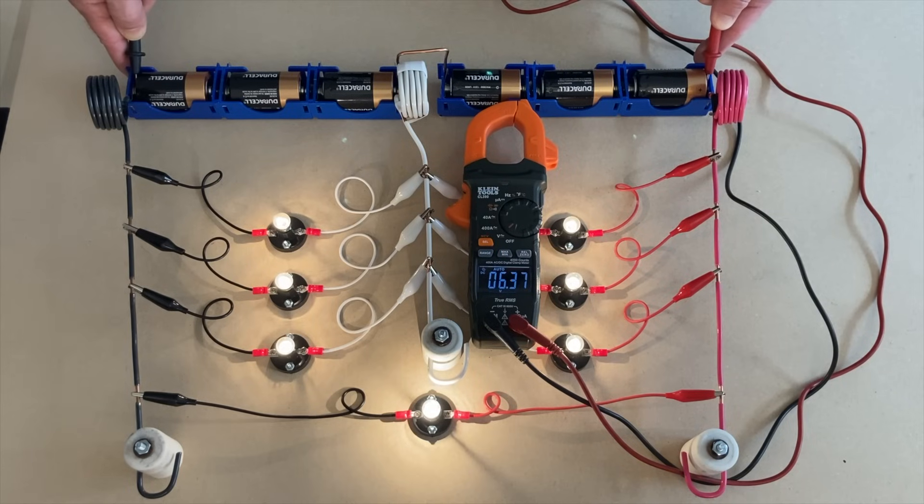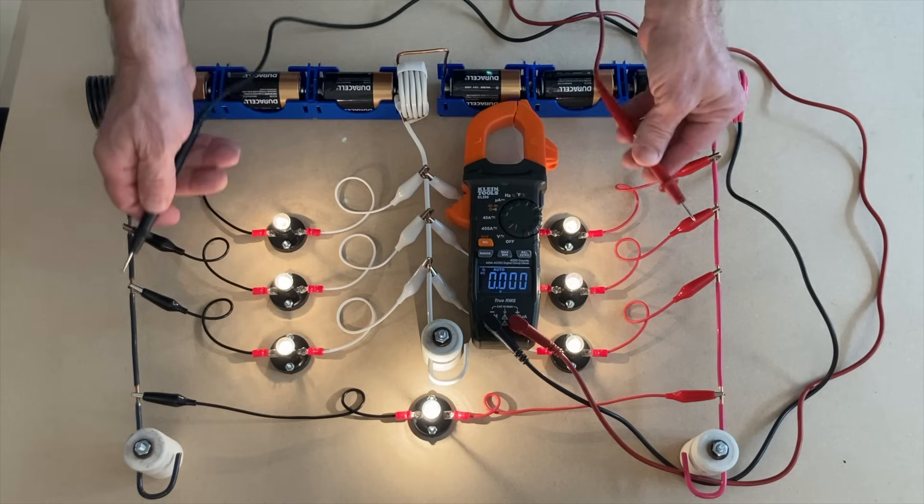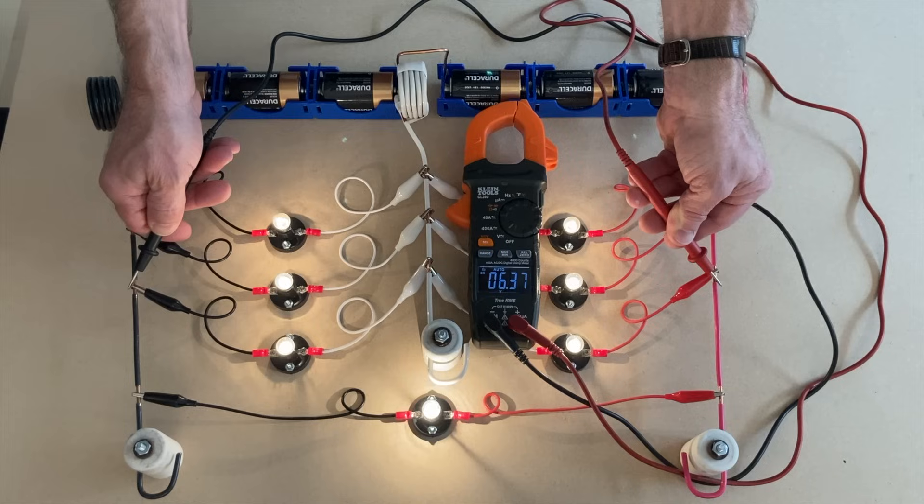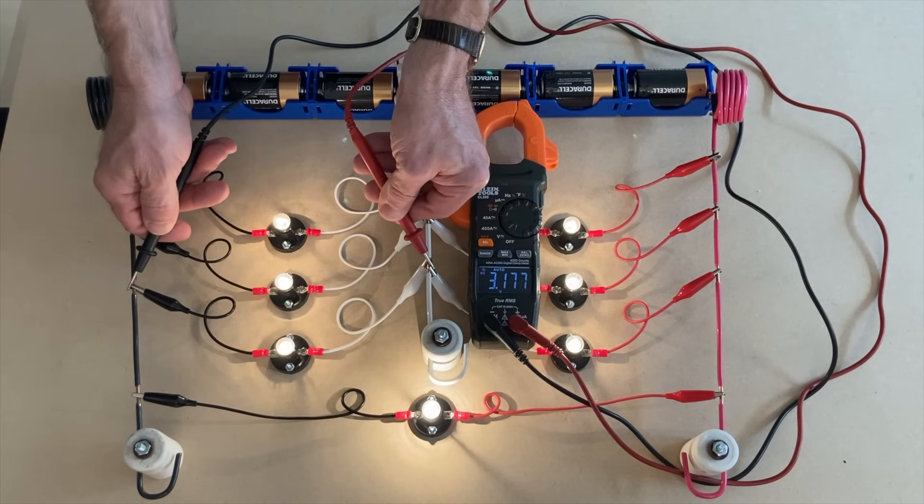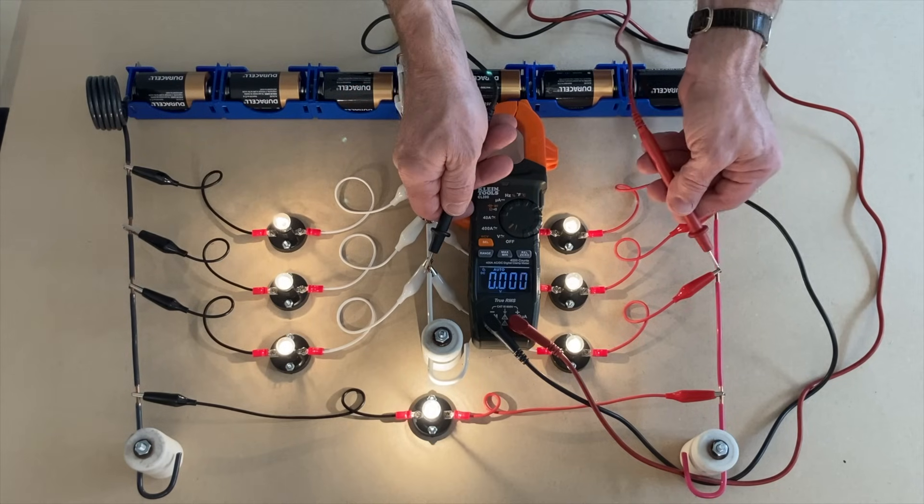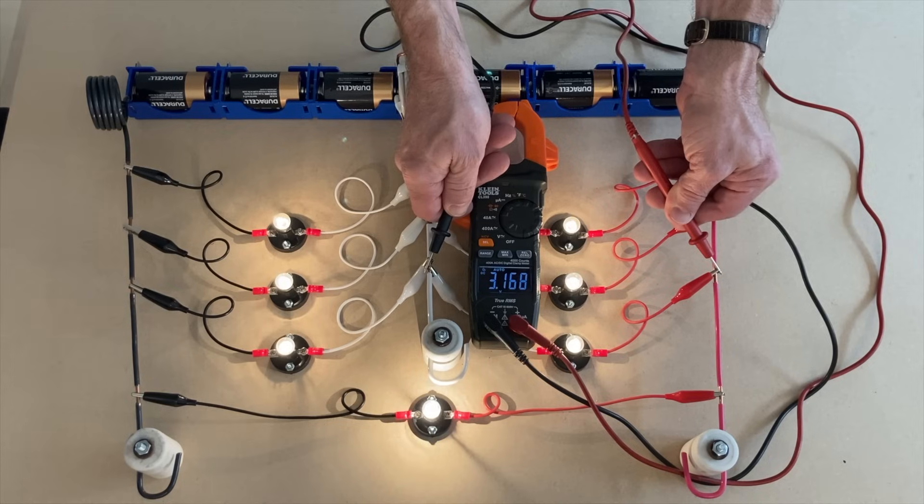And so we end up with black to red voltage being about six point three, six point four volts. And since we have six point three volts here, we should expect about half that from black to white. Sure, three point one, three point two and from white to red. Again, three point one close to three point two.